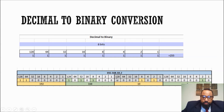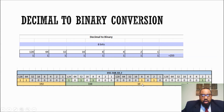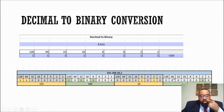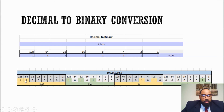Next octet: we need 10. 128 is too much — 0. 64 is too much — 0. 32, too much — 0. 16, too much — 0. 8 works — put a 1. 4 is too much — 0. Then 2: put a 1. So 8 plus 2 equals 10. Last octet: we need 2. 128 through 4 are all too much — all zeros. Then 2: put a 1. Then 1: put a 0. Your binary conversion for 192.168.10.2 is now complete.